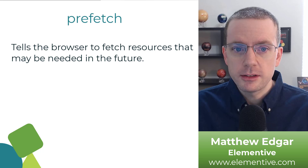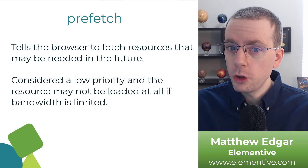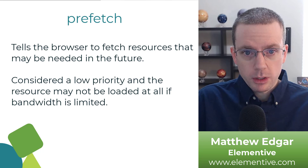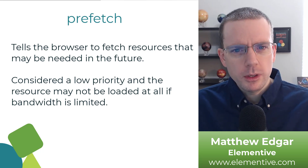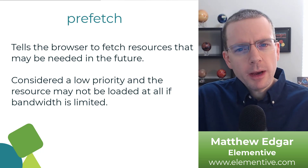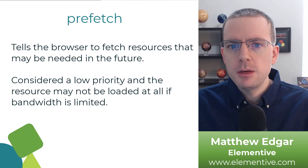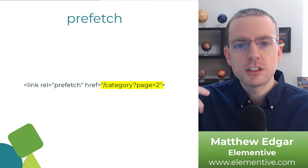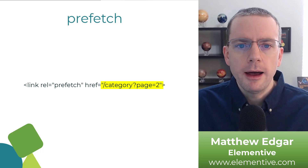Next we have prefetch. Prefetch tells the browser to fetch resources that might be needed in the future, but aren't needed right now. This is considered a low priority and the resource may not be loaded at all if bandwidth is limited — for example, if somebody is visiting with a really slow connection, the browser is likely to just ignore this command altogether. Think about a paginated sequence on your website: maybe you have a category page with page one, page two, and so on. You might want to prefetch page two when somebody's on page one, so that page two is ready a little bit faster when people click to it. That's what this example code shows — a link tag with the rel set to prefetch and the href set to the URL, in this case category?page=2.